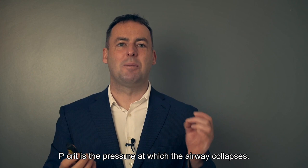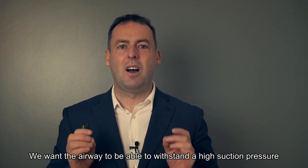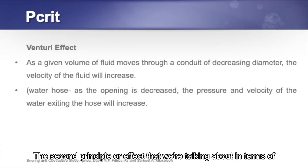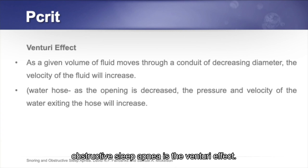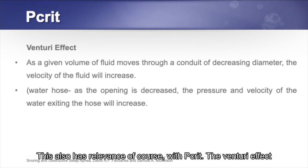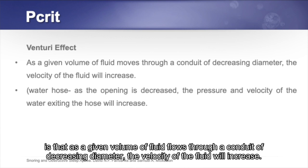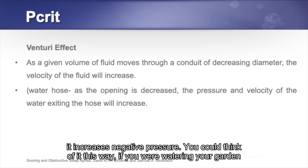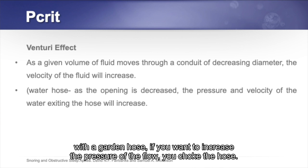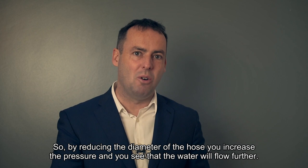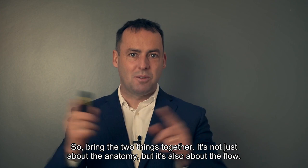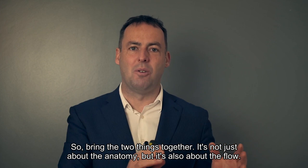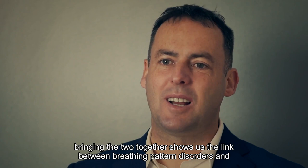PCRIT is the pressure at which the airway collapses — we want the airway to withstand high suction pressure, meaning the dilator muscles are doing their job. The Venturi effect is also relevant: as a given volume of fluid flows through a conduit of decreasing diameter, the velocity increases. Think of a garden hose — choking the hose reduces its diameter, increases pressure, and the water flows further. Together, the Bernoulli principle and the Venturi effect show the link between breathing pattern disorders and obstructive sleep apnea.